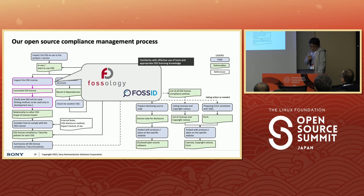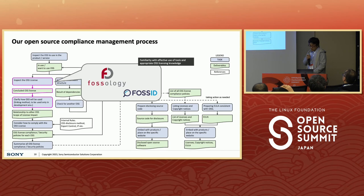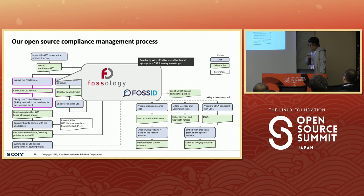We have another difficulty: license investigation. After we identify software components, we investigate the license of each component. There are great scanning tools like FOSology, FOSSID, and so on — in fact, we use both of them. But to identify appropriate licenses, we need to be familiar with those tools. Scanned results may contain false detections, so we need some know-how to deal with them effectively. And of course, open source licensing knowledge is needed.